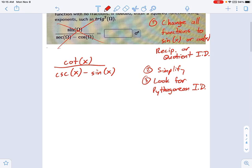We're going to follow these same steps. So on top, what I have is cosine x divided by sine x, all divided by, now cosecant is 1 over sine. That's my reciprocal identity. 1 over sine minus sine of x.